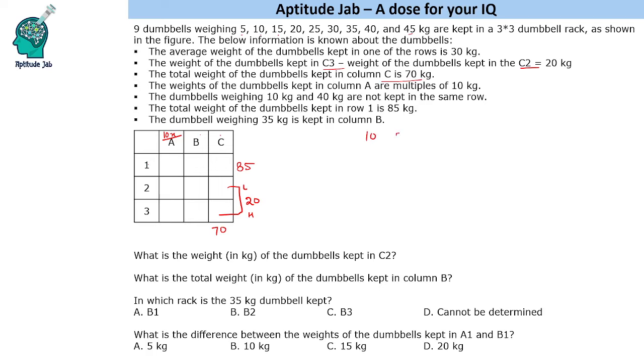So we have 10, 20, 30, 40. These are the 4 multiples and 3 of them will be used here. One will be an odd one out.